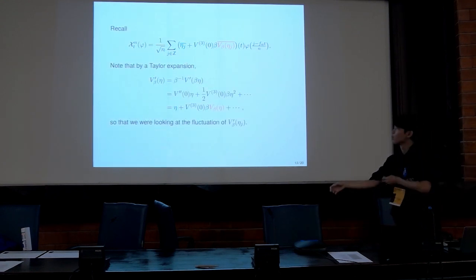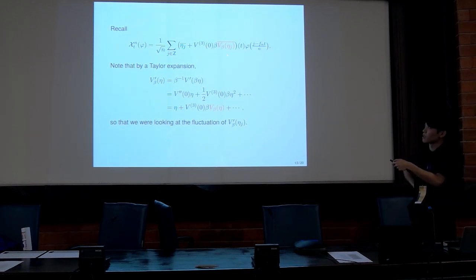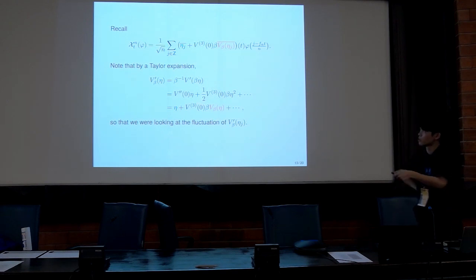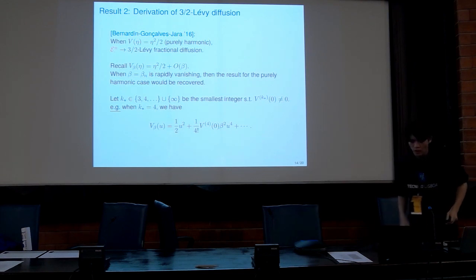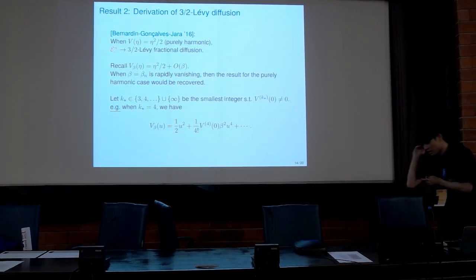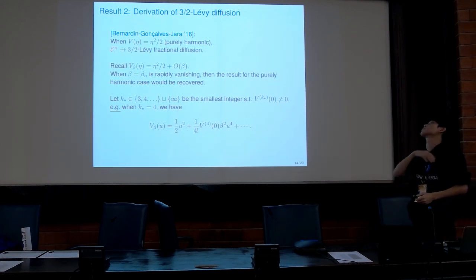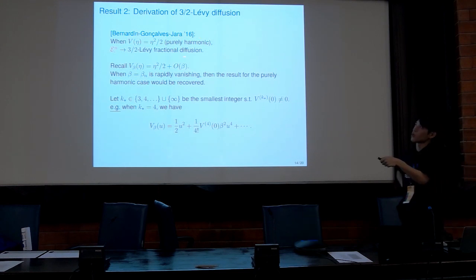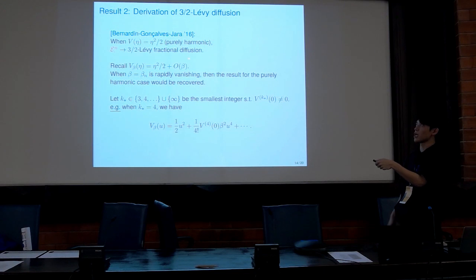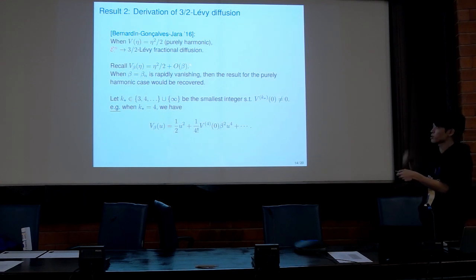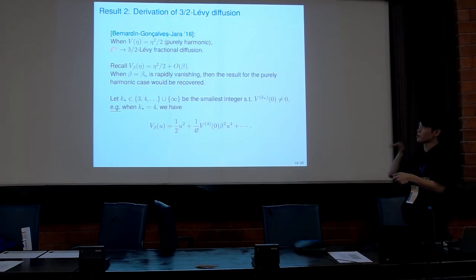Hence, starting from a very generic nonlinear potential, we can show that the limiting object is given by the stochastic Burgers equation, demonstrating that this equation is in some sense universal. This fluctuation field can be understood as a fluctuation of the derivative of the potential. On the other hand, I'd like to note something about the energy fluctuation. When the potential is purely harmonic, the energy fluctuation exhibits anomalous behavior in the limit. Since we are taking this perturbative form, when we let beta vanish very rapidly, it is expected that this anomalous behavior also appears in this model.